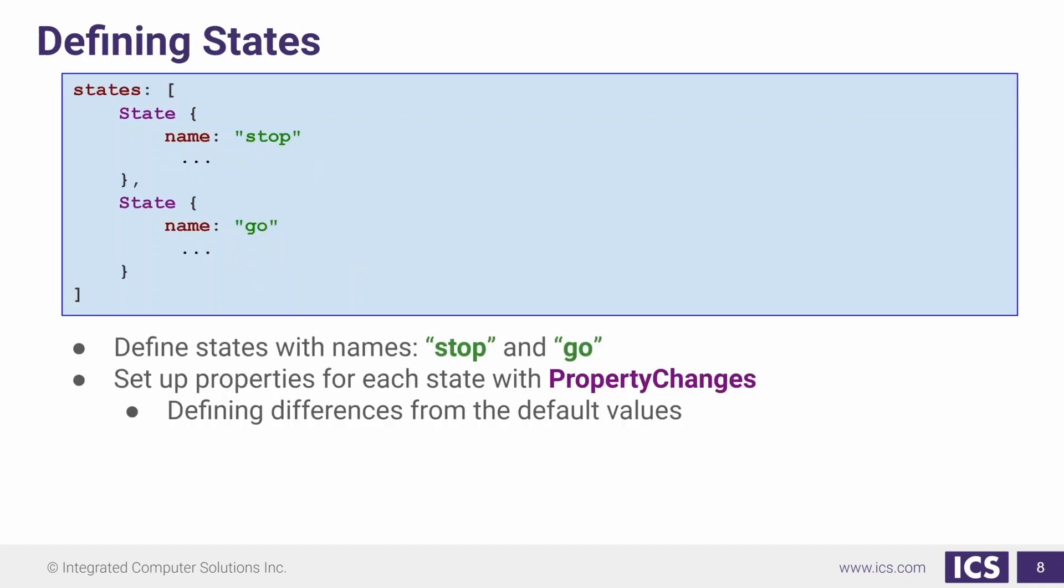Now we're going to set up our array of states. This is where all the magic happens. We start an array with our states property. It is in square brackets. Here we have our state items. Our first state item, we've given a name stop. And our second state item, we've given a name go. This is the string that we're going to use to set the state property for our root item later on.